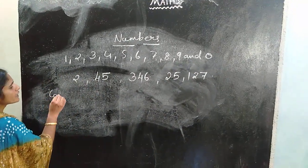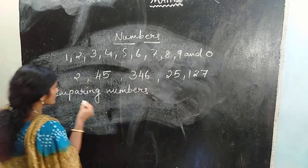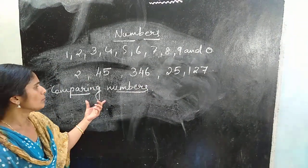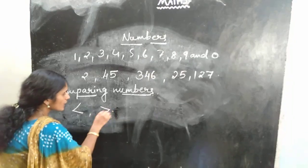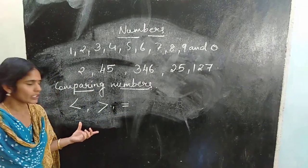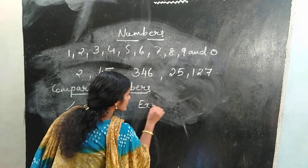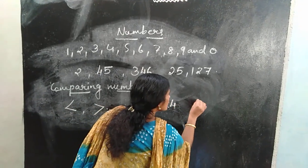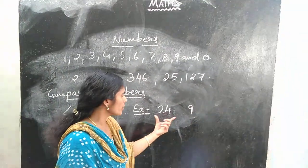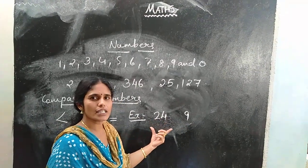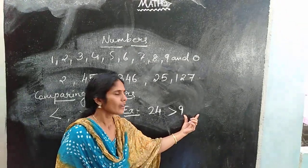The next is comparing numbers. To compare numbers we can use 3 symbols: greater than, less than, and is equal to. These 3 symbols are used to compare numbers. For example, 24 and 9 — 24 is a 2-digit number and 9 is a 1-digit number. A 2-digit number is greater than a 1-digit number, so 24 is greater than 9.